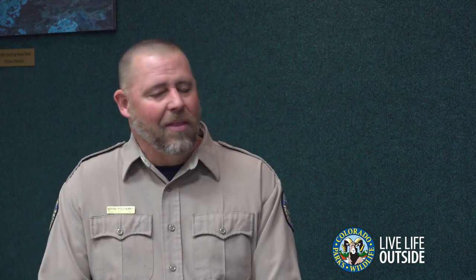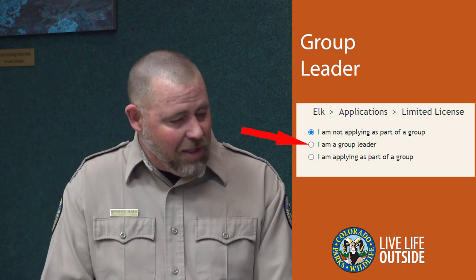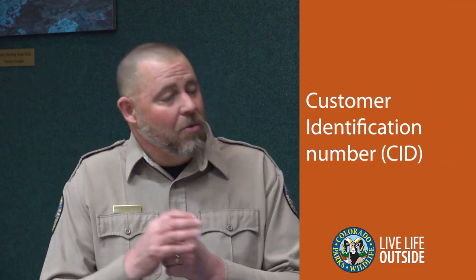Let's talk about the process to apply as a group. First, the group has to choose a group leader. That group leader needs to apply first. When they apply, there are a couple of checkboxes: early in the application it will ask if you're applying as a group — click yes — and then it asks if you are the group leader — click yes. That group leader then provides their CID to the rest of the group, as well as all of the hunt codes they entered for their first, second, third, and fourth choices.